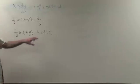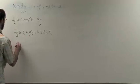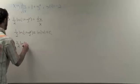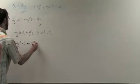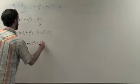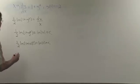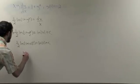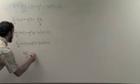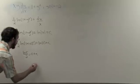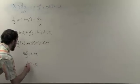To solve for c, we use our initial value. Where we see y, we replace it with a negative 2. And where we see x, we replace it with 1. This gives us ln of 5 over 2 is equal to 0 plus c. Thus, c equals ln of 5 over 2.